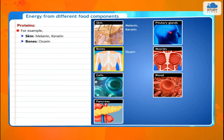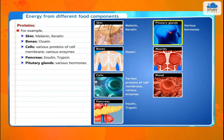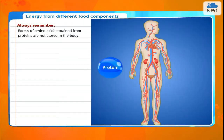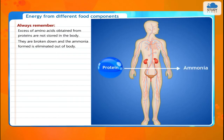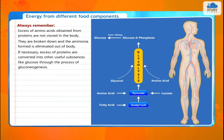Bones: ossein. Cells: various proteins of the cell membrane, various enzymes. Pancreas: insulin, trypsin. Pituitary glands: various hormones. Muscles: actin and myosin — flexible proteins. Blood: in the process of gluconeogenesis.